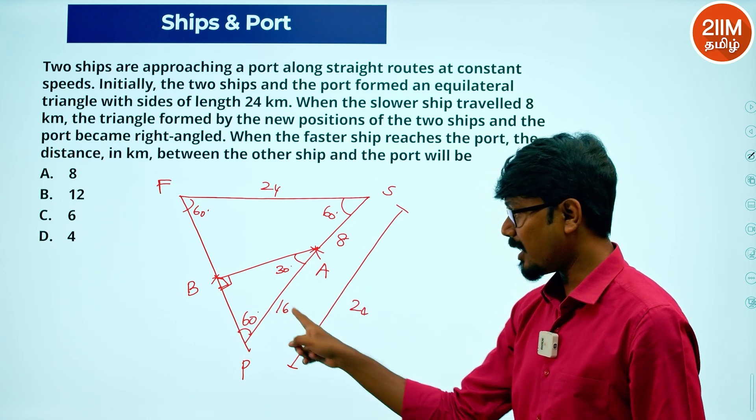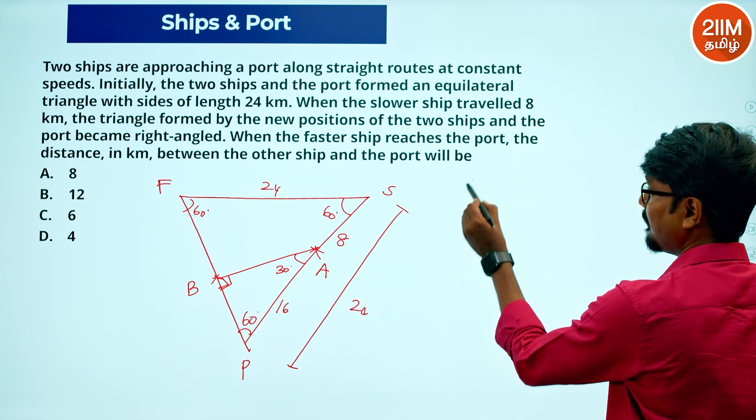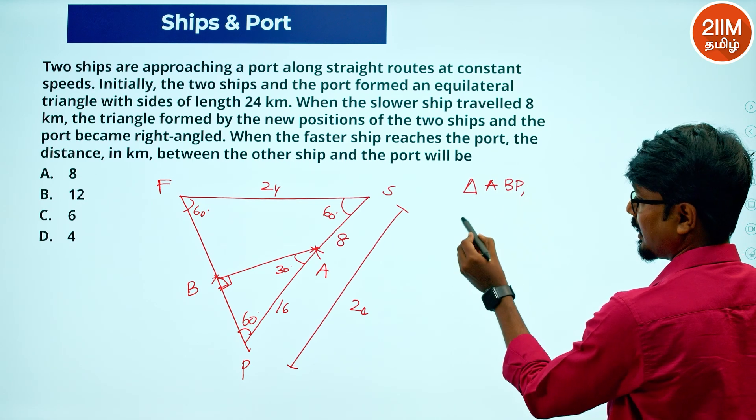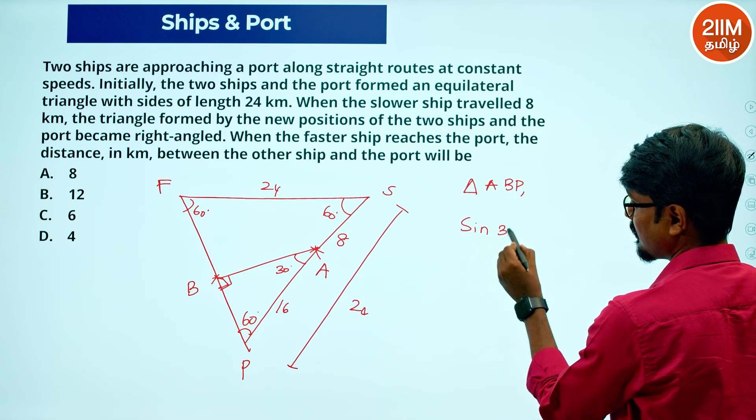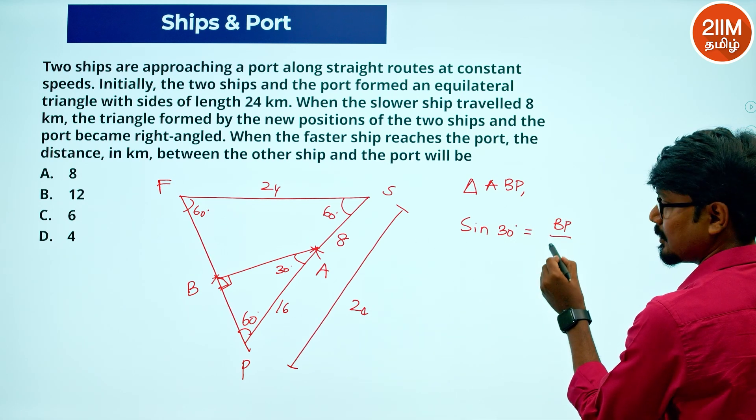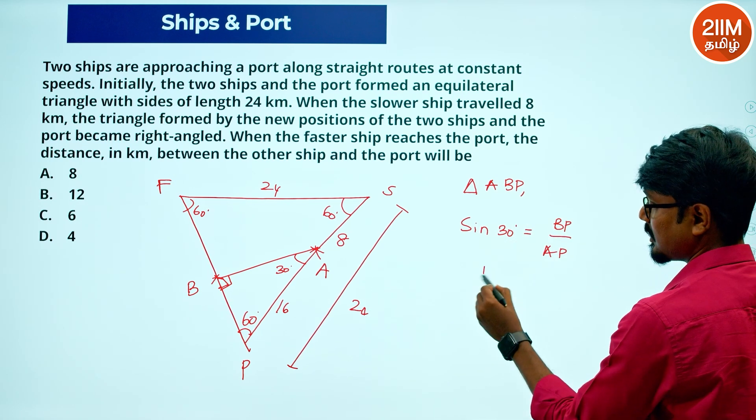Sin theta at the top of the opposite by hypotenuse. Triangle A, B, P. Sin 30—sin 30 opposite is BP, hypotenuse is AP.